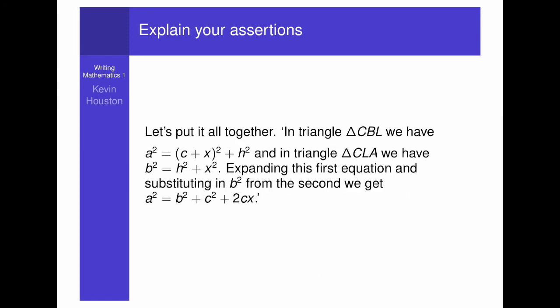Let's put it all together. In triangle CBL, we have a squared equals c plus x all squared plus h squared. And in triangle CLA, we have b squared equals h squared plus x squared. Expanding the first equation and substituting in b squared from the second, we get a squared equals b squared plus c squared plus 2cx.